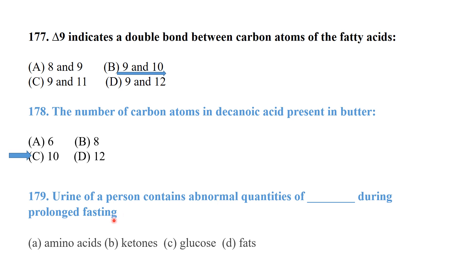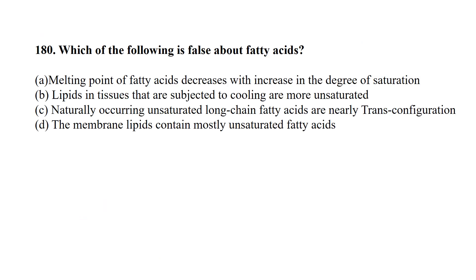MCQ 175: The urine of a person contains abnormal quantities of which compound during prolonged fasting? During prolonged fasting, ketone body construction increases. The answer is ketone bodies.